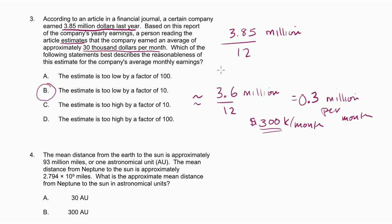Another way you could have thought about this is instead of writing 3.85 million, you could have written that as 3,850,000 divided by 12. Or you could have said, well, that's approximately 3,600,000 divided by 12. And then you would have said, oh, that's 300,000. You would have gotten the same answer, which is 10 times more than their estimate.